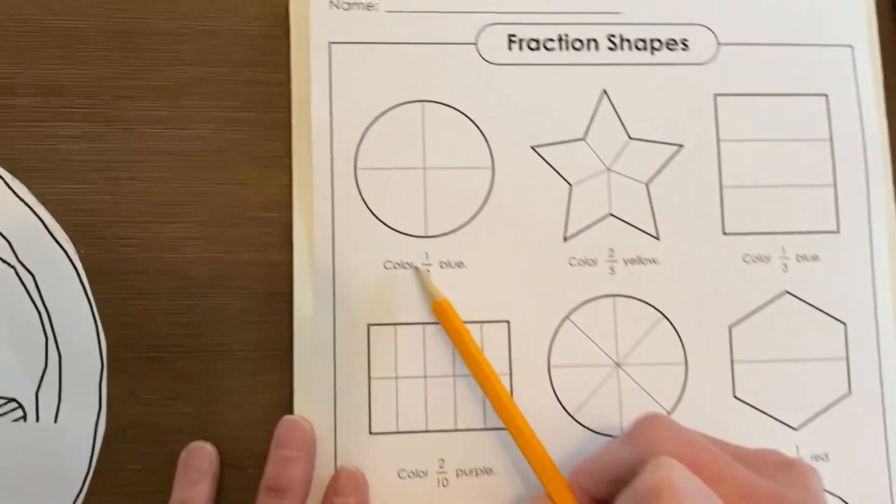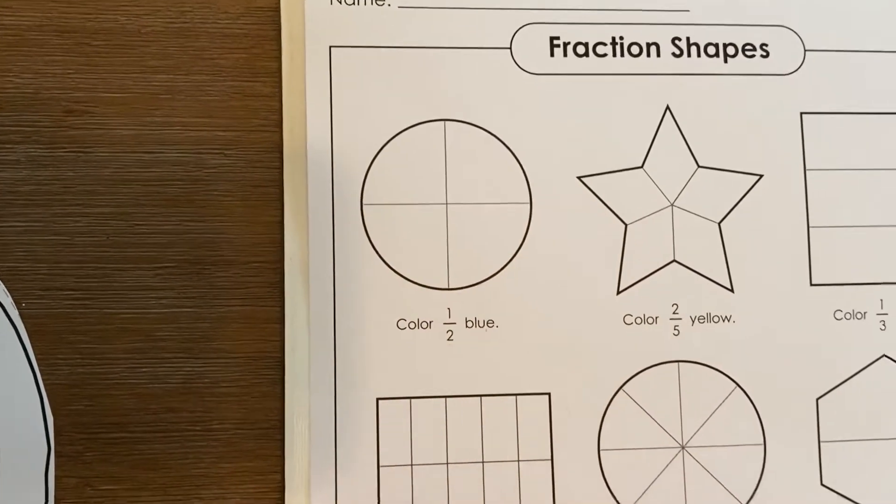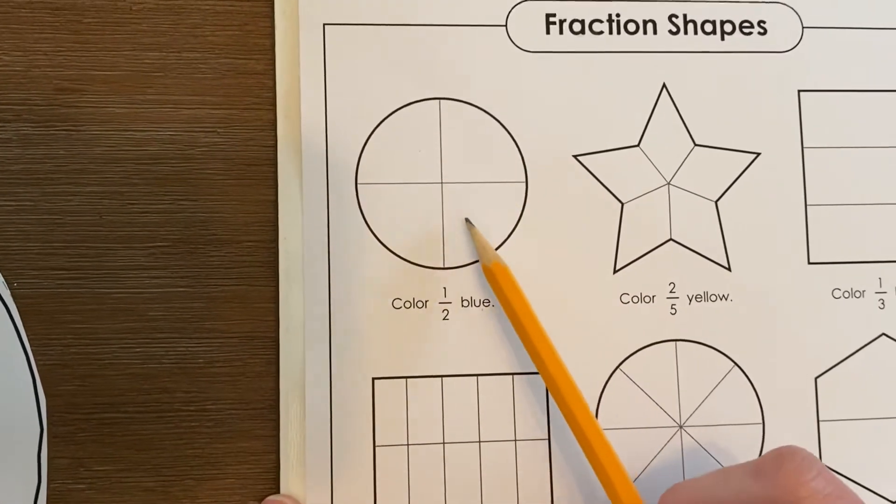This says color one-half blue. How many pieces is this cut into? One, two, three, four.